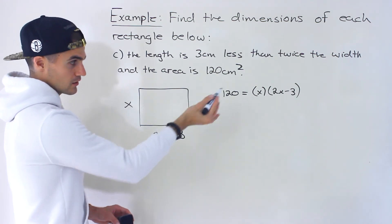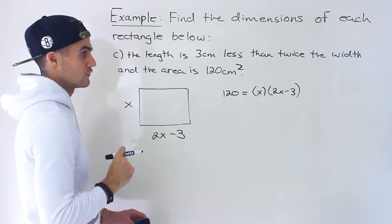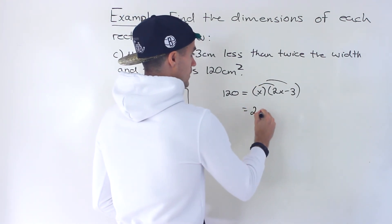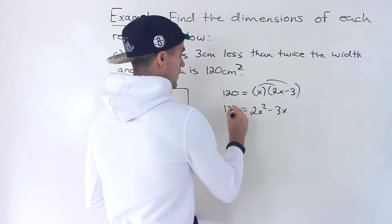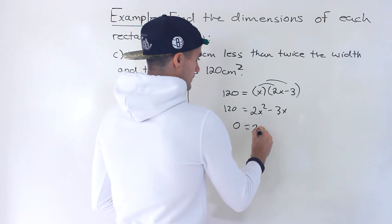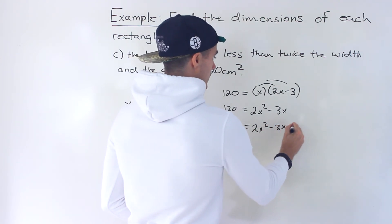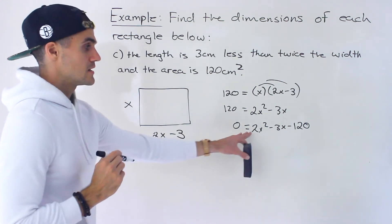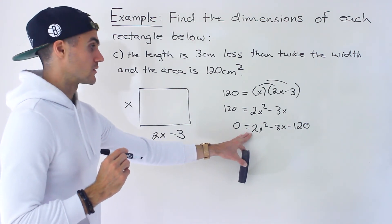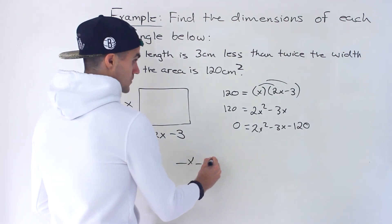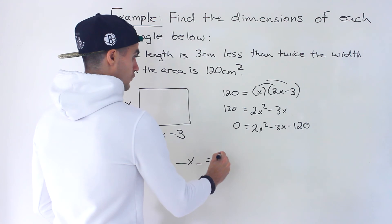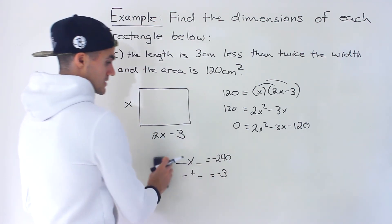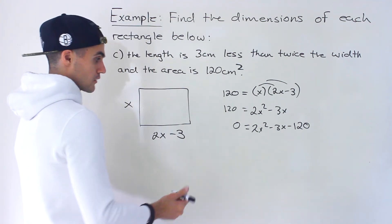We have an equation in one variable. Expanding gives 2x² minus 3x. Bringing the 120 over: 2x² minus 3x minus 120 equals 0. In this particular case, this is not going to factor smoothly — there are no two integers that multiply to 2 times negative 120 (which is negative 240) and add up to negative 3. So we'll have to use the quadratic formula.